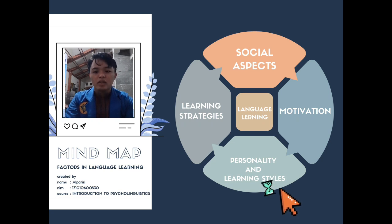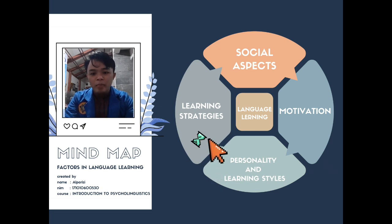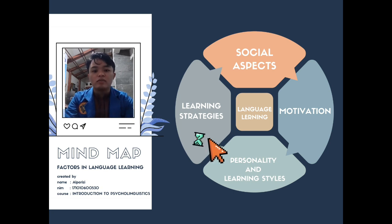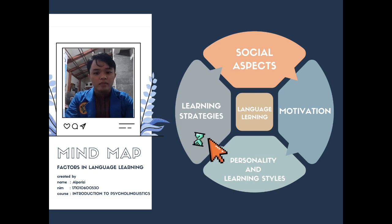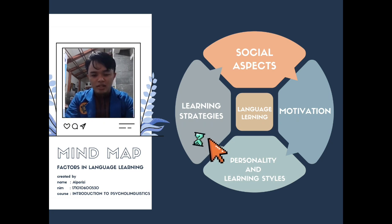Some aspects of personality and learning style include extroversion and introversion, risk-taking, field independence and dependence, and visual, auditory, and kinesthetic styles. Learning strategies is the last dimension discussed under psycholinguistic factors affecting the foreign language learning process. Learning strategies are used by students to help them understand information and solve problems. A learning strategy is a person's approach to learning and using information.